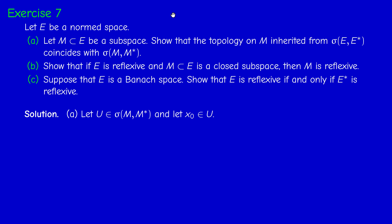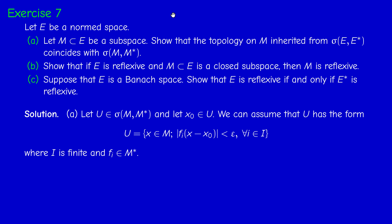First inclusion: sigma(M, M*) is contained in the subspace topology. Consider an element U in the weak topology of M. We have to prove it is of the form M intersected with a weakly open set of E. Consider an element x0 in U. Since U is open in the weak topology of M, we can assume U is a basic set: there are finitely many elements in the dual of M — F1, ..., Fk — and a positive epsilon, such that |Fi(x - x0)| < epsilon for every i.